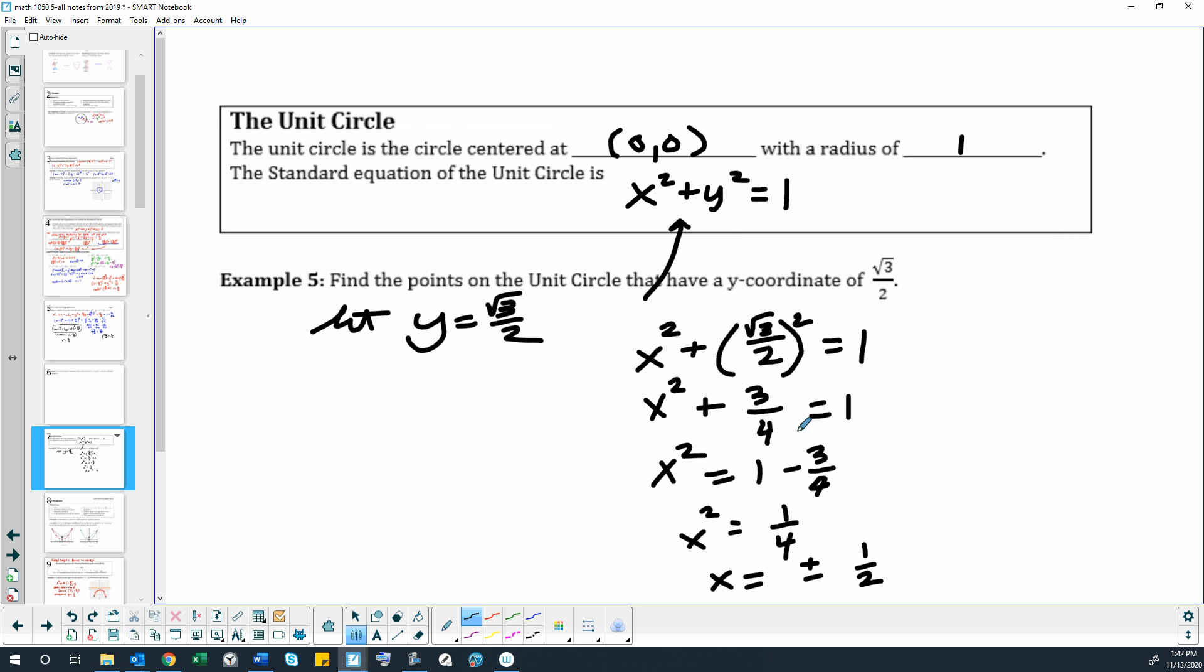But if we really wanted to find all the points, the points can be positive or negative. And so a y coordinate of square root of 3 over 2 could have x coordinates of positive 1 half or negative 1 half. So there are two different points that fit that description.